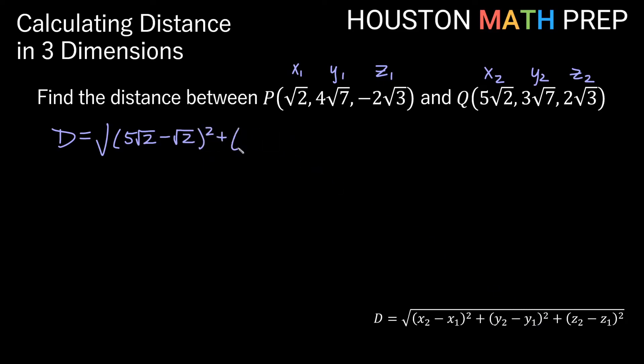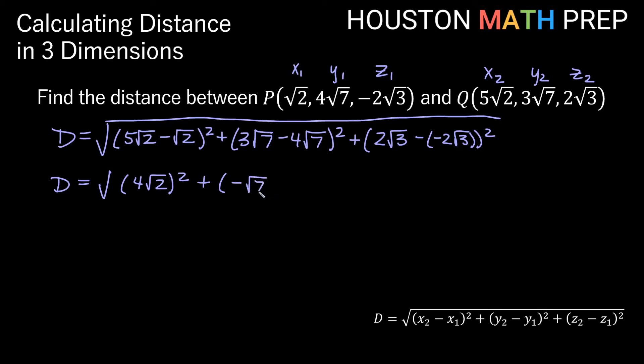plus y2 minus y1 squared. So here we'll get 3√7 minus our y1, which is 4√7, that squared plus z2 minus z1 squared is going to be 2√3 minus negative 2√3. So just be careful there with the signs. And we'll have the root of all that once we're finished with that. So our distance is going to be, if you'll notice here, these are like terms at least. 5√2s minus a √2 would give us 4√2s squared, plus 3√7s minus 4√7s is -1√7, plus here 2√3 minus negative would be like plus. Another 2√3 would give us 4√3s.